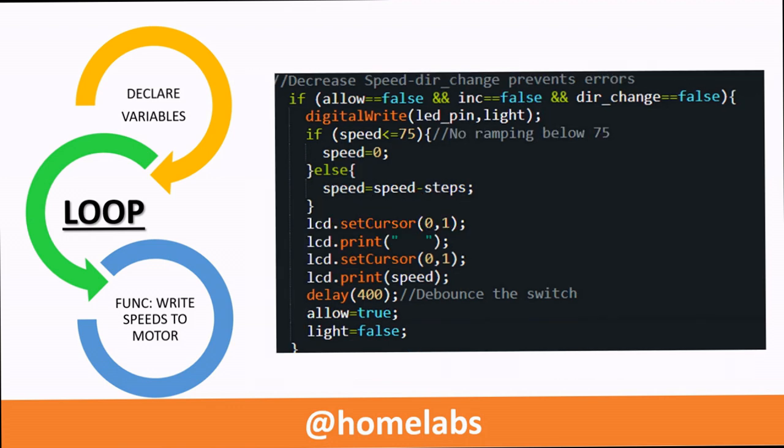This is the if loop for reducing the speed. You can notice that the INC variable is set to false. If the speed happens to be less than 0 then the speed is directly set to 0. In all other cases the speed is reduced in steps of 5. And in all these loops you can notice that the status of the Arduino is also printed to the LCD screen.